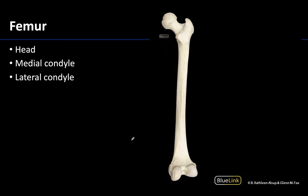The femur is the longest bone of the body, the bone of the thigh, and it is quite robust in both its proximal and distal portions. The major structure to point out proximally on the femur is the head of the femur. This is the ball in the ball-and-socket joint formed at the hip, and it articulates with the acetabulum.